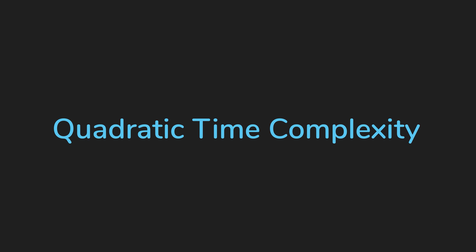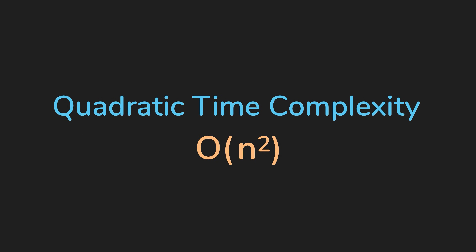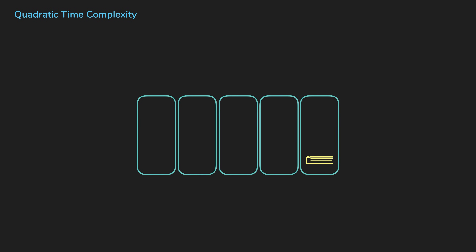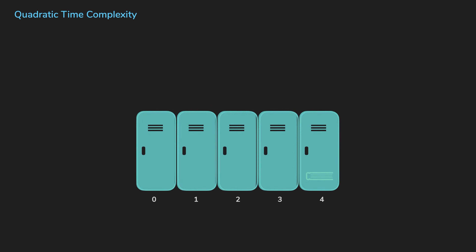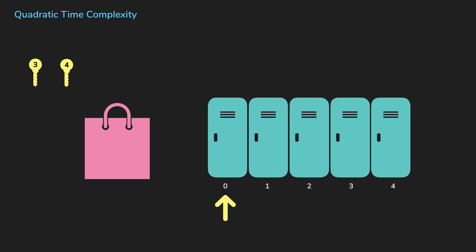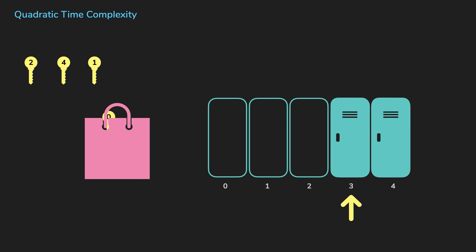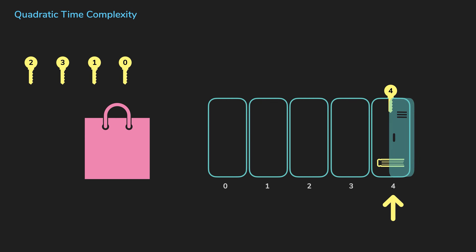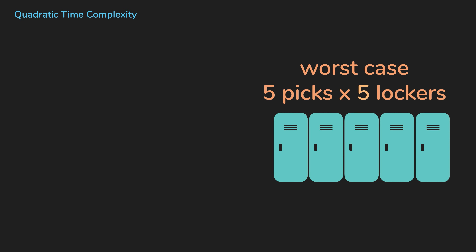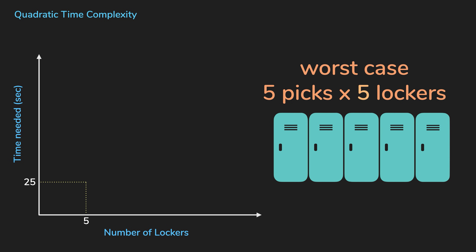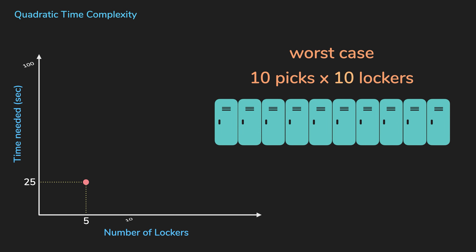Another common time complexity is quadratic time complexity, O(N²), where the time increases quadratically to the input size. Let's put a twist on the first example: you need a key to open each locker, and the keys are jumbled up in a paper bag. You pick a random key and place it outside the bag until you get the key for the locker you want. Once you've opened the locker, you put everything back and start again. When N equals five, in the worst case you need to pick keys five times for each locker — 25 times total. If picking a key takes one second, it takes 25 seconds. When N is 10, you'd pick keys 100 times — 10 times for each locker — so the time increases quadratically.